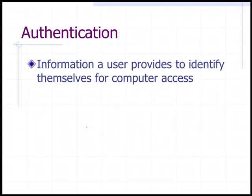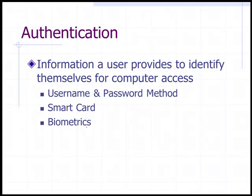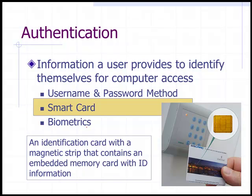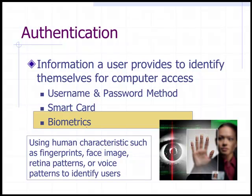Authentication is information a user provides to identify themselves for computer access. For example, they can use a username and password method — those login pages on a website where you type your username and password. Another possibility is a smart card, which has identification information inside a magnetic strip with an embedded memory card. Biometrics lets you use any human characteristic such as fingerprints, face images, retina patterns, or voice patterns to identify users.